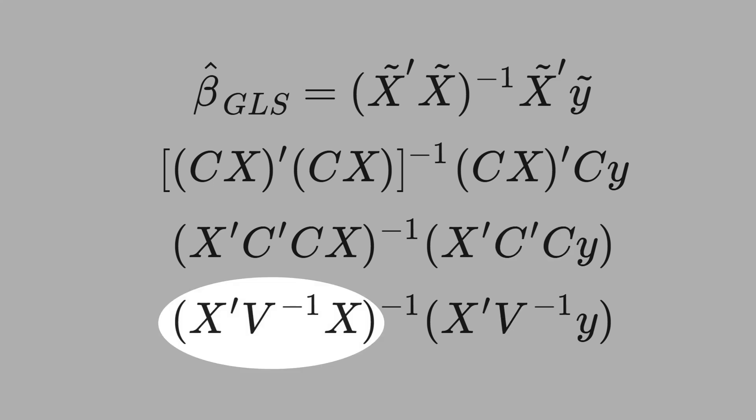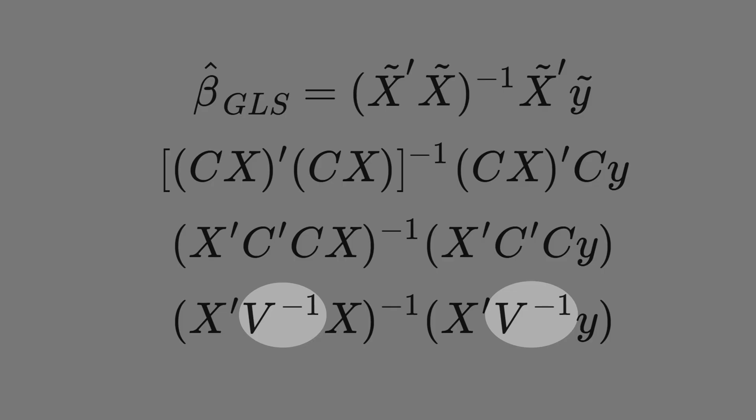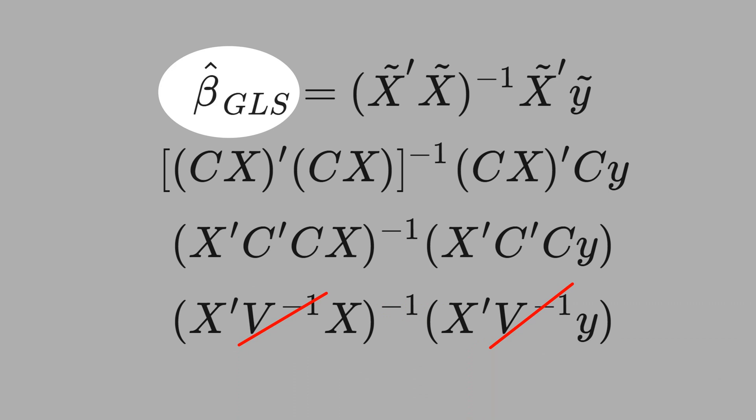For all more advanced estimators, you are going to see the same thing. Inside here, you have the inverse matrix of the variance term. What happens if the inverse of V is the identity matrix? You get the beta hat of ordinary least-square. Therefore, ordinary least-square is a special case of generalized least-square.